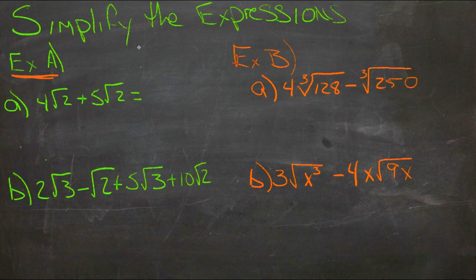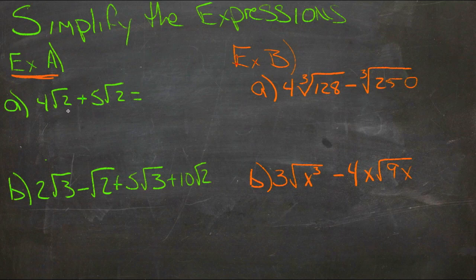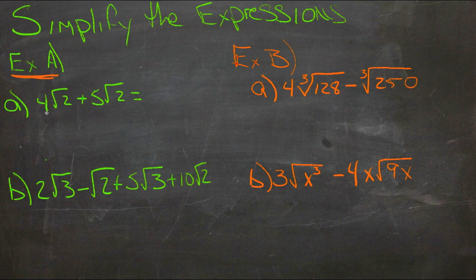In its most basic form, simplifying radical expressions is just combining like terms. If we take a look at example A, the first question we have is 4 roots of 2 plus 5 roots of 2.